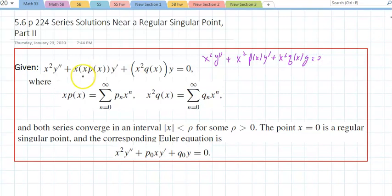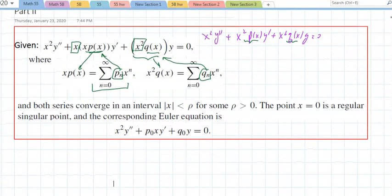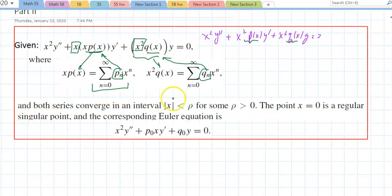So here the difference is they're taking this x out. If you leave it like this, then you could read what p of x is and q of x. Where x times p is the series p sub n, and x squared times q would be the series q of x. That's pretty much what this theorem will allow you to have. Both series converge as long as absolute value of x is less than rho. The point x equals 0 is a regular singular point, and the corresponding Euler equation is right there.